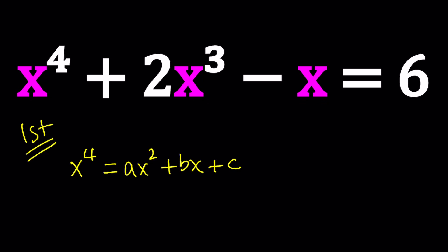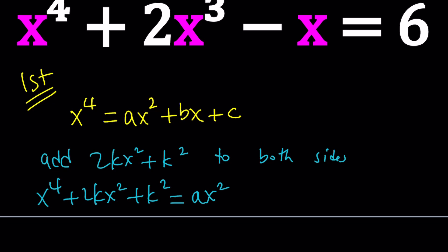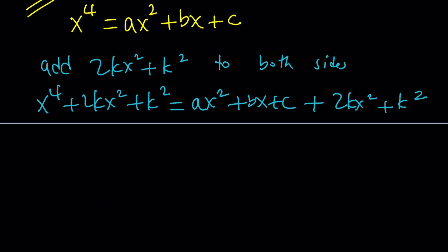So I'm going to be adding something to both sides, and my goal is to make the left-hand side a perfect square. I'm going to add 2kx squared plus k squared to both sides. When you do that, you're going to get x to the fourth plus 2kx squared plus k squared. And on the right-hand side, you're going to have ax squared plus bx plus c plus 2kx squared plus k squared.